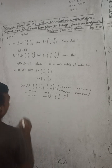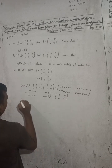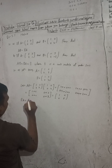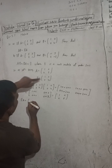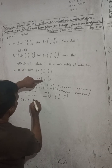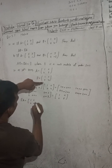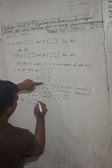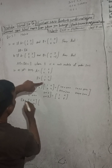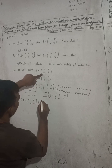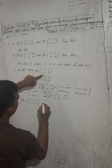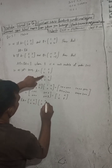BA — first we write B: [1, 0; 0, 4], and then A: [1, 0; 0, 2]. First row with first column: 1 into 1 plus 0 into 0.